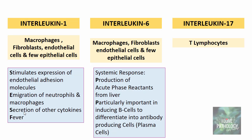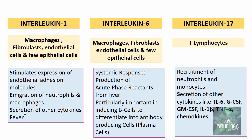Interleukin 17, produced by T lymphocytes, helps in the recruitment of neutrophils and monocytes. It also helps in the secretion of other cytokines like interleukin 6, colony stimulating factors such as granulocyte colony stimulating factor and granulocyte monocyte colony stimulating factor, interleukin 1, tumor necrosis factor, and also chemokines.